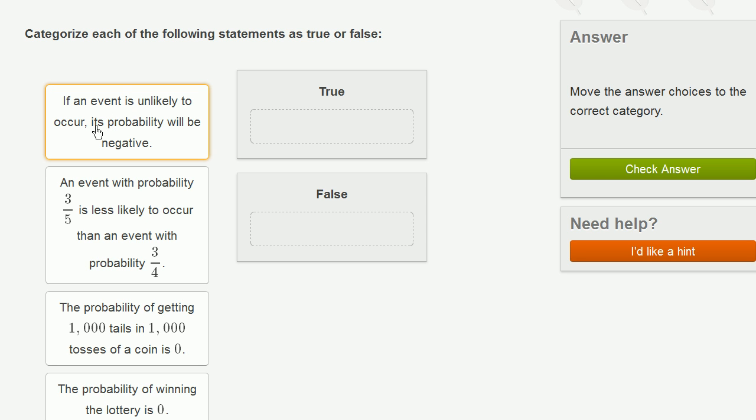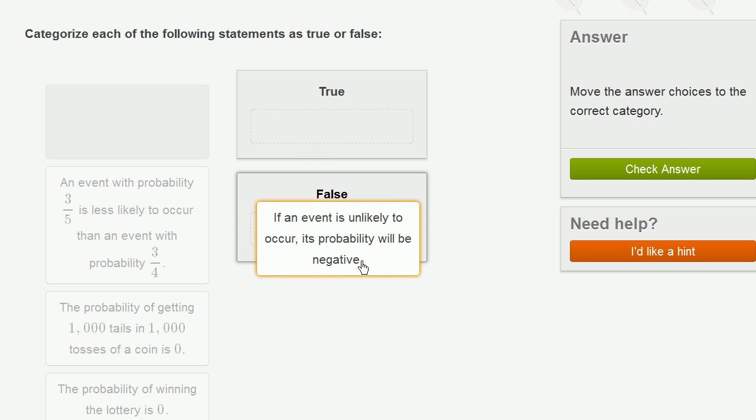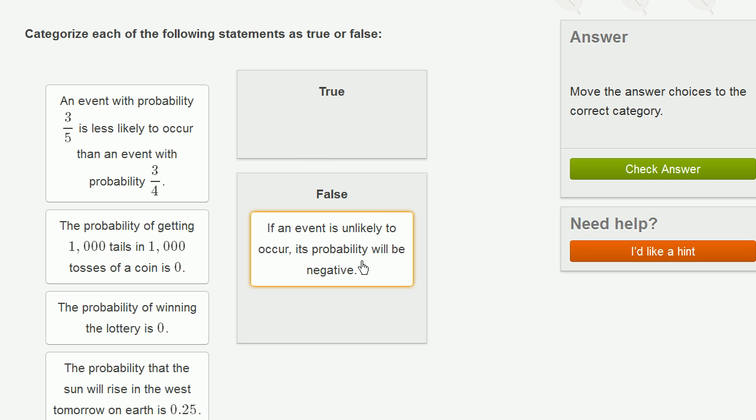If an event is unlikely to occur, its probability will be negative. No, your probability can never be negative. Even if something is impossible, then the probability will be 0. If it's highly unlikely, it'll be close to 0, but it'll still be positive.